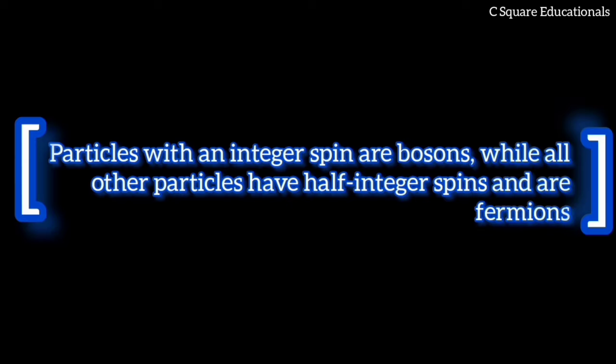the theory states that particles with an integer spin are bosons, while all other particles have half-integer spins and are fermions. As an example, electrons have half-integer spin and are fermions that obey the Pauli exclusion principle, while